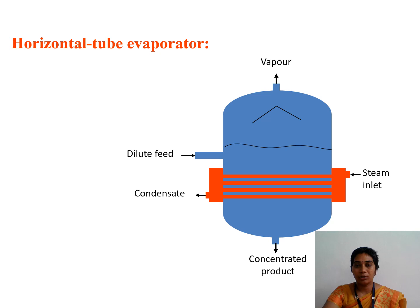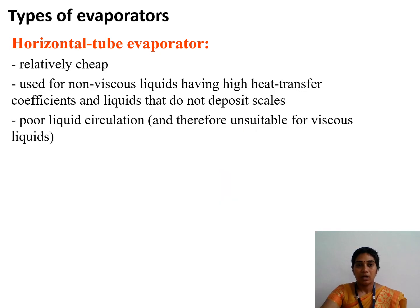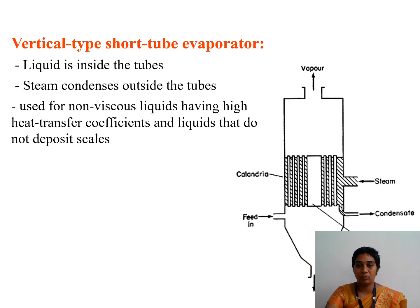Next is the horizontal tube evaporator. As the name conveys, the tube is placed horizontally where steam is passed inside the tubes and over the tubes the samples will be passed, and heat transfer takes place. The advantages are that it is cheap and can be used for non-viscous materials and does not deposit scales on the evaporators. One disadvantage is poor liquid circulation, so it cannot be used for viscous food materials.